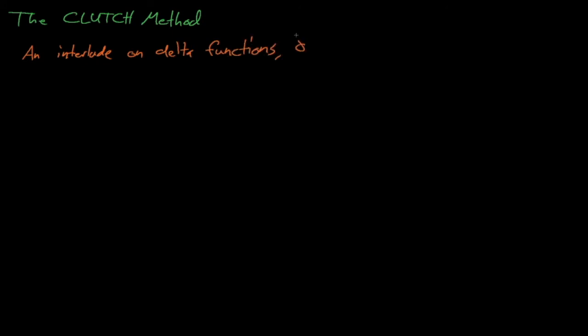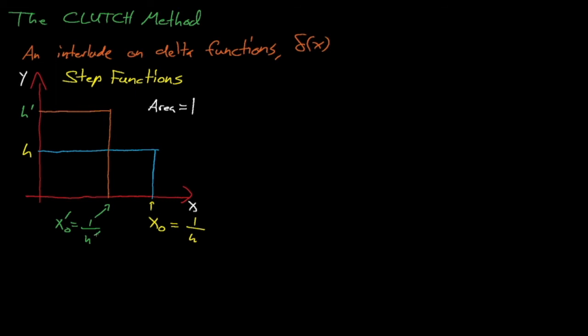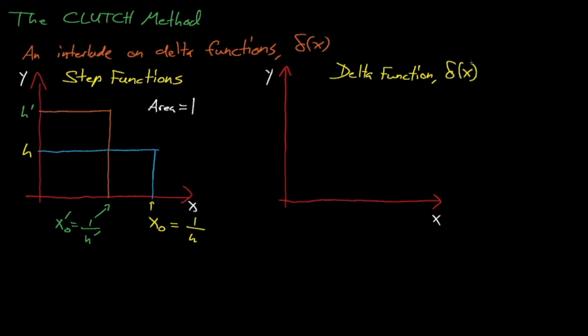Now the time has come for us to discuss the Clutch method, which uses Contributon theory to estimate eigenvalue sensitivity coefficients with more efficiency and with lower memory requirements than the IFP method. Before we discuss Clutch, let's take a brief interlude to review delta functions, which are one of the mythical beasts of the mathematical world. Let's assume that we have a step function which assumes a value of h over some range and then steps down to 0 at some value of x. If our step function steps down at x0 equals 1 over h, then we'll have an overall area of 1. If we change the height and duration of this step function, we can preserve its area by setting each alternative value of x0 to always equal 1 over h. Delta functions are a version of this step function where we take the limit as x0 approaches 0.